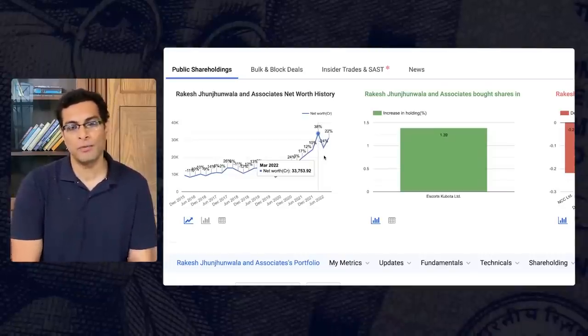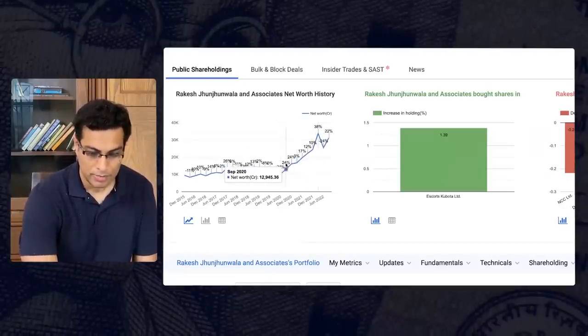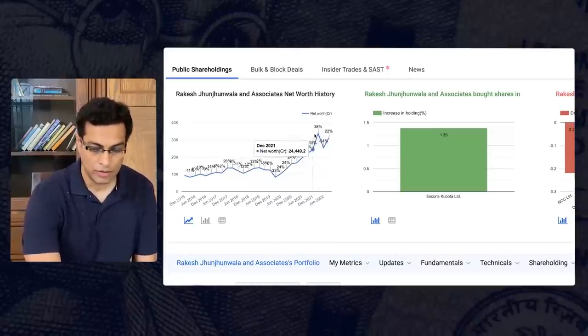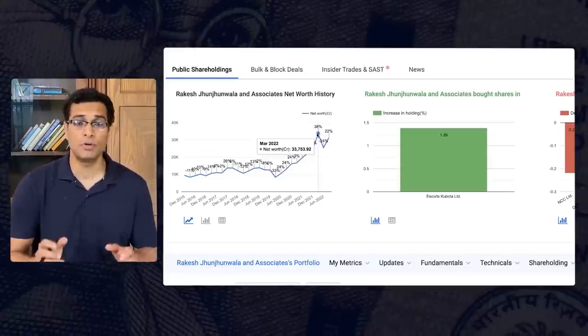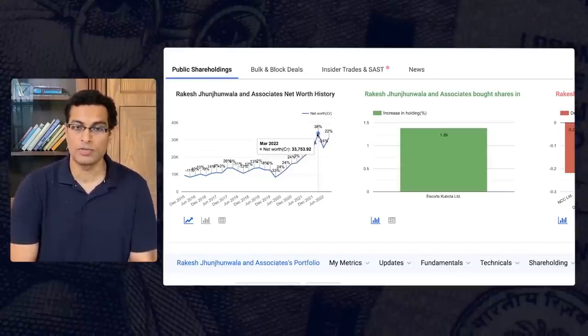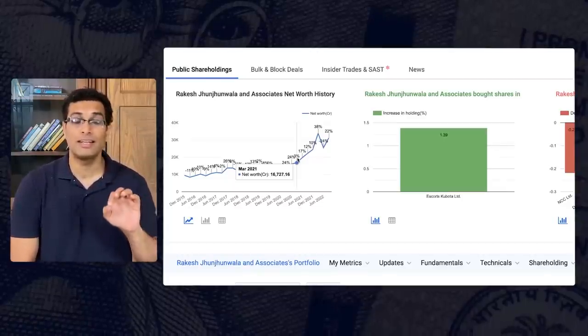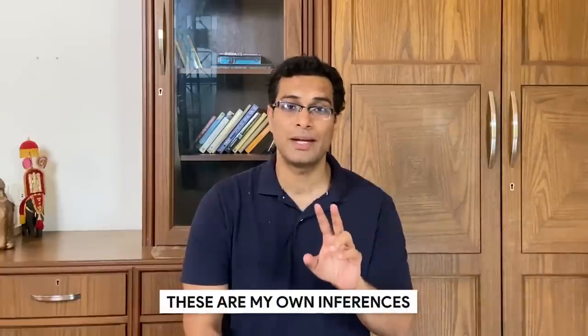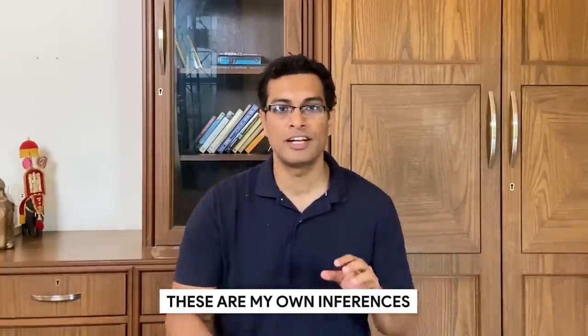I will talk about some of these stocks subsequently in the video. But before that, there is one important point I would like to discuss with you by taking you to the overall dynamics of Mr. Jhunjhunwala's portfolio. If you take a look at the portfolio size in March of 2022, his portfolio size was roughly 33,000 crore. But if you go to March of 2021, his portfolio size was roughly 16,000 crore, almost half. So what exactly happened?